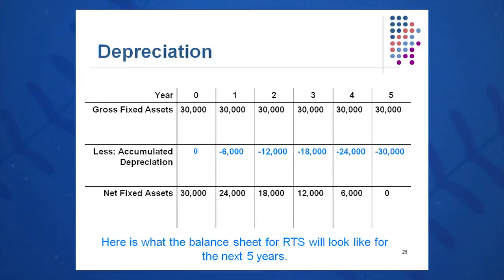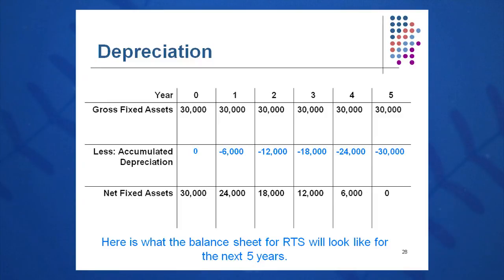Net fixed assets, or net property, plant and equipment, is what's left after taking away depreciation. At time zero, it's $30,000 gross less no depreciation, equaling $30,000. By end of year one, it's $30,000 gross less $6,000 accumulated depreciation, giving a net fixed asset value of $24,000. By the end of year five, you should have $30,000 of accumulated depreciation on the balance sheet and zero net book value for that item.